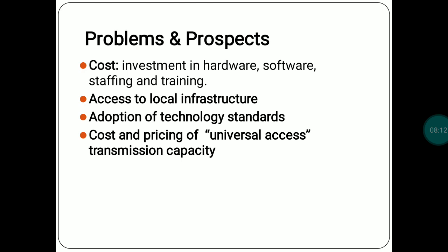So basically, cost will be needed. Then there is access to local infrastructure. What happens is that many people, like nowadays online classes are going on, but there are many people who are far apart where there is no proper net connectivity, so they do not have proper access. So there is no equal distribution. Then adoption of technology standards: there are some standards that adapt to political or legal issues, or religious issues, such as banning a particular website or not providing network services.